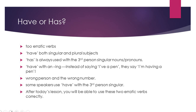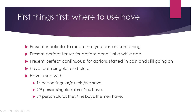So after this video, we'll be able to use these erratic, unruly verbs correctly. These are the things we should remember when we use them. We use these verbs in the simple present tense, in the present perfect tense, and in the present perfect continuous tense. In the simple present tense, we use 'have' and 'has' to mean that we possess something, that we own something. In the present perfect tense, they are used for actions that have been completed just a while ago.